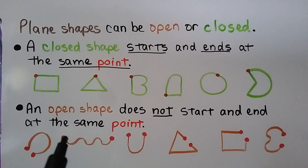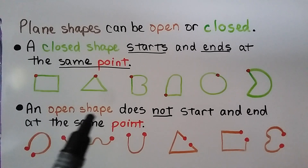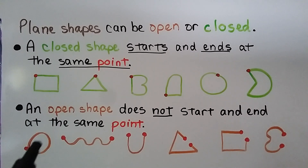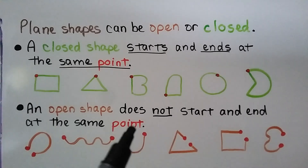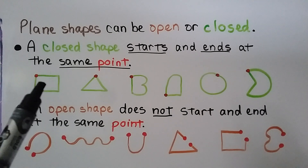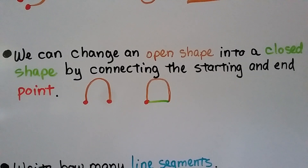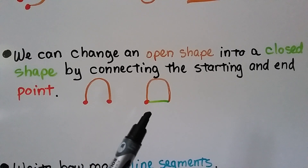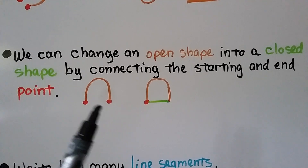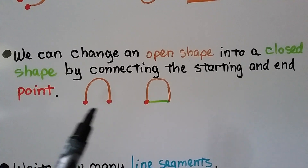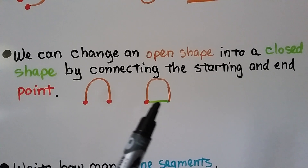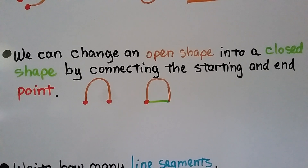All of these open shapes start at one place and end at another point. It's called an open shape, and it looks like it's open. If you were inside and those were walls, you'd be able to get out. For the closed shape, if those were walls, you wouldn't be able to get out — they start and end at the same point, so there's no opening. We can change an open shape into a closed shape by connecting the starting and end point — instead of having two different points, we just connect it back to its starting point. Now it's a closed shape.